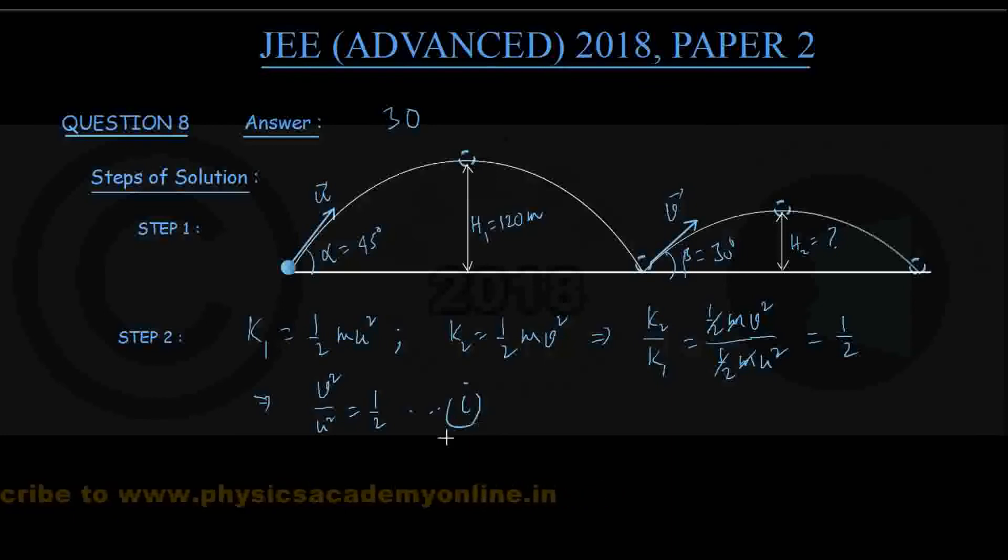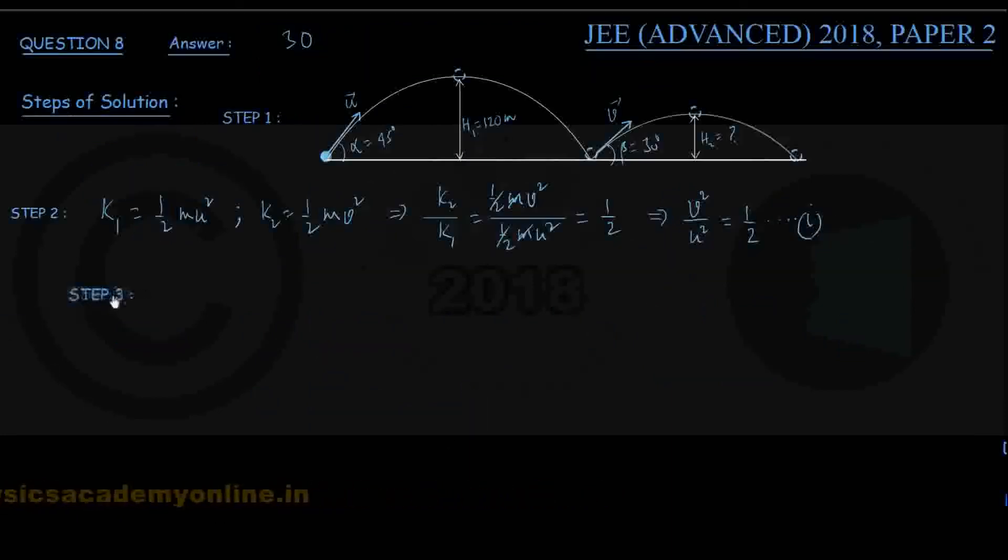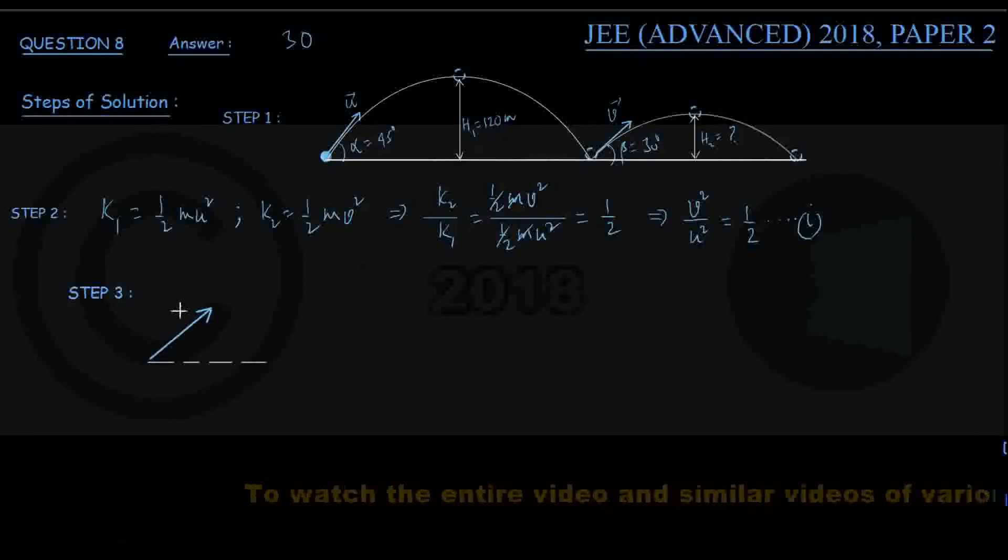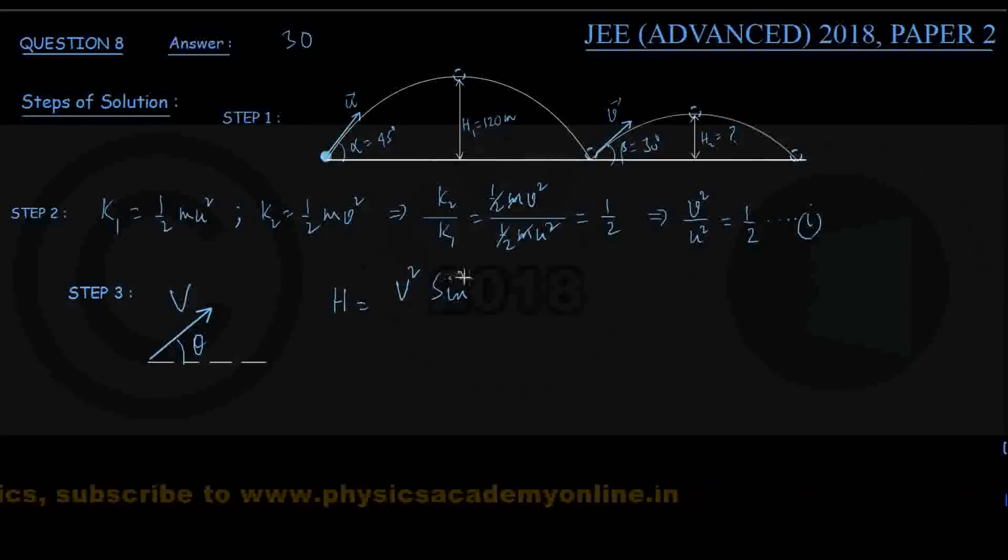In the next step, that is step number 3, recall the formula for maximum height reached by a projectile in terms of speed of projection and angle of projection. In the general case, if projectile's initial speed is capital V and it makes an angle of theta, this angle of projection is theta, the maximum height is given by the formula. In the general case, V squared sin squared theta divided by 2g. So we use that for this ball during the first flight and then the second flight.